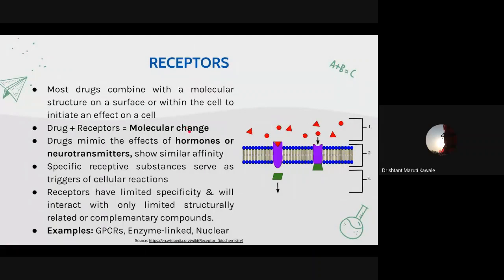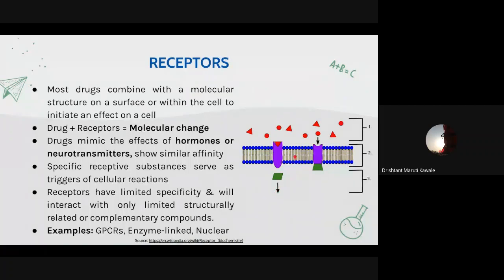Drugs mimic the effects of hormones or neurotransmitters and show similar affinity — the same effect is shown by drugs synthesized in a lab or on industrial scale. Specific receptive substances serve as triggers of cellular reactions. Receptors have limited specificity and will interact with only structurally related or complementary compounds — not every molecule can bind to a specific receptor; it must be structurally or conformationally similar.